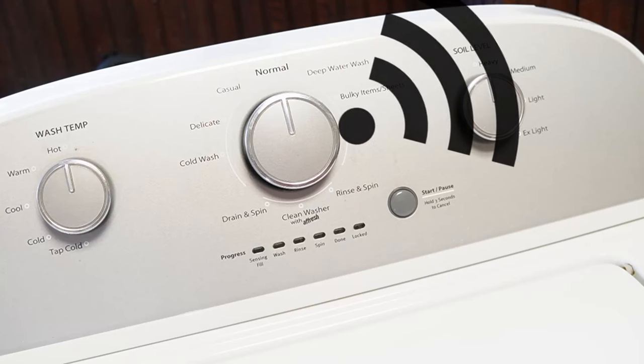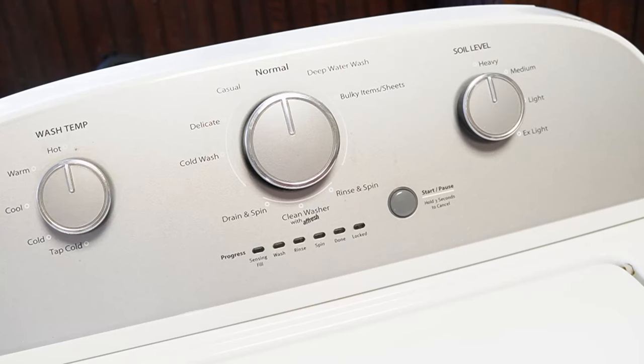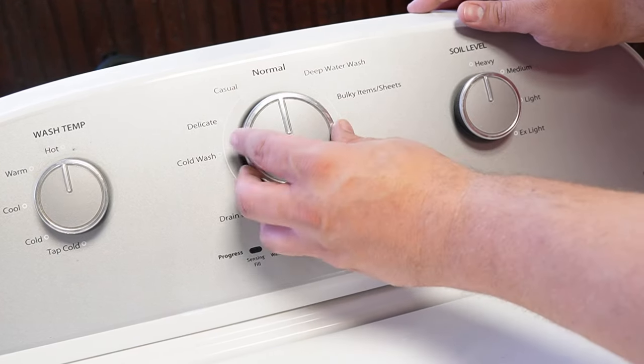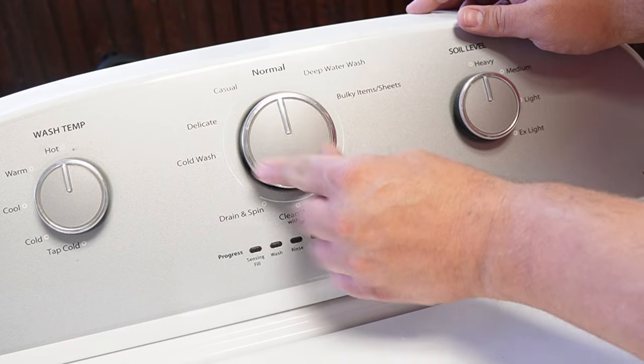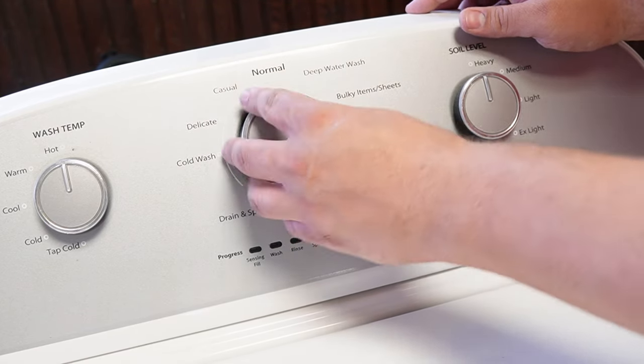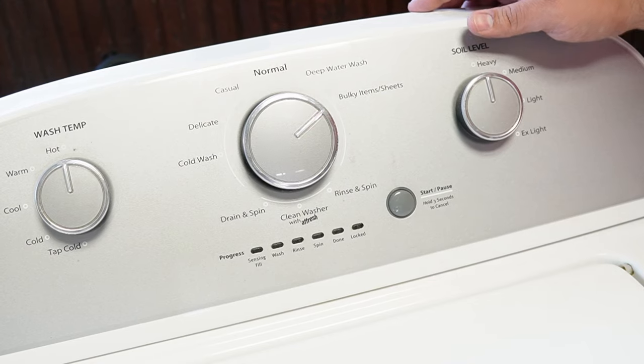You should hear a faint clicking noise from the back of the washer relay as it boots up. With the washing machine freshly rebooted, you want to rotate the dial again counterclockwise 360 degrees. Then you'll turn the knob right three clicks, left once, then right once again.